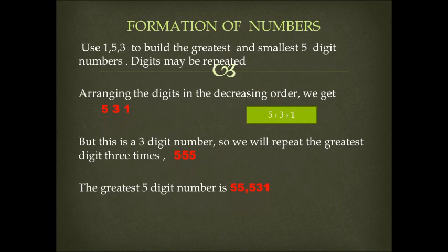Now let us learn to build the greatest and smallest five-digit numbers using repetition of digits. The question is: use 1, 5, and 3 to build the greatest and smallest five-digit number. Digits may be repeated. Arranging the digits in the decreasing order, we get 5, 3, 1.